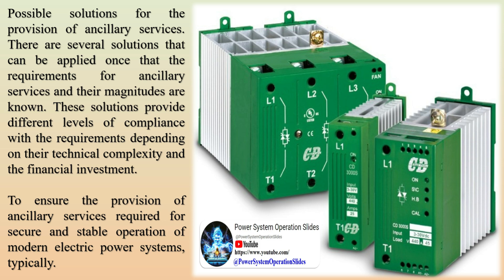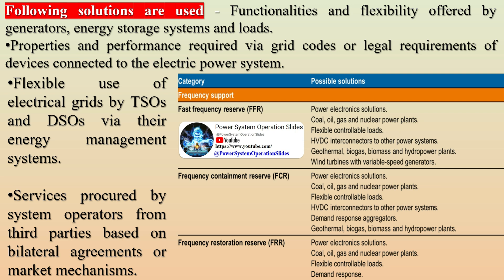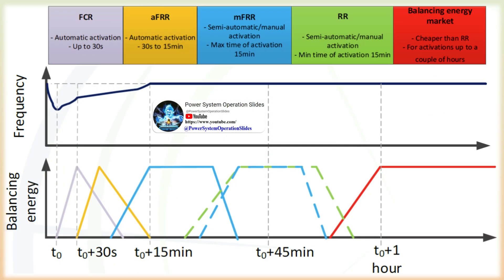Ancillary services can include synchronized regulation, which corrects for short-term changes in electrical imbalances that might affect the stability of the power system. Contingency reserves, which are used to respond to an unexpected failure or outage of a system component such as a generator, transmission line, circuit breaker, switch, or other electrical element. Black start regulation, which supplies electricity for system restoration in the unlikely event that the entire grid loses power. Flexibility reserves, an emerging concept for addressing variability and uncertainty on timescales longer than contingency and regulating reserves.